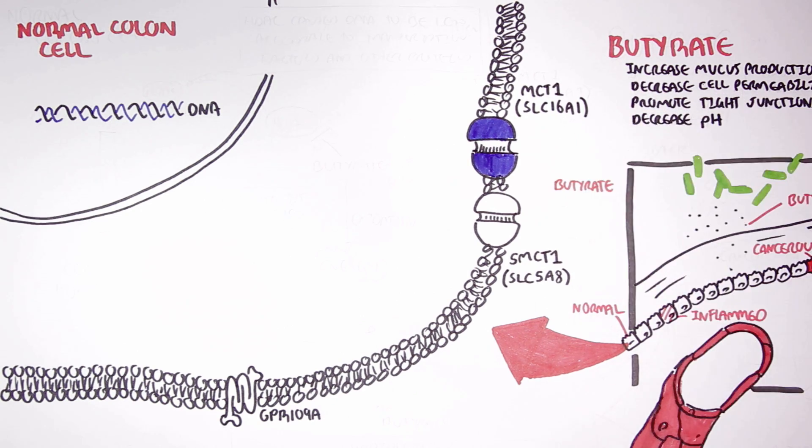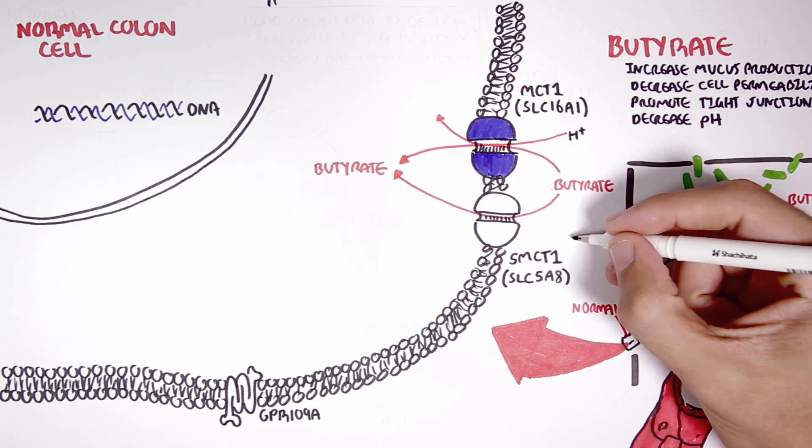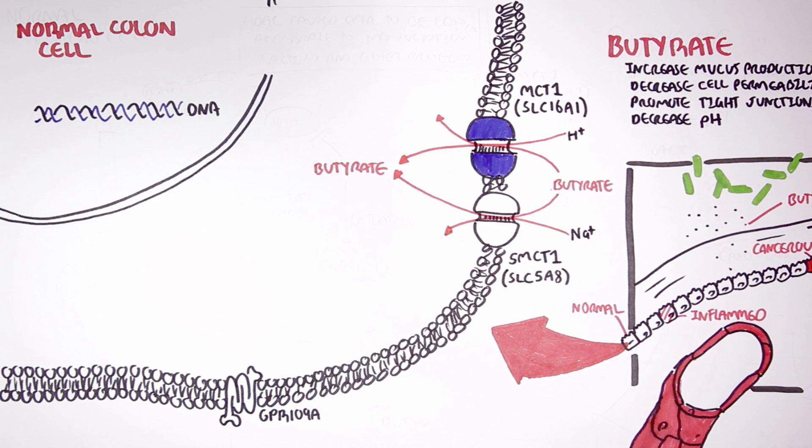MCT1 works as a co-transporter for hydrogen and butyrate. SMCT1 functions as a co-transporter for sodium and butyrate.